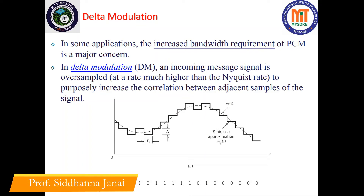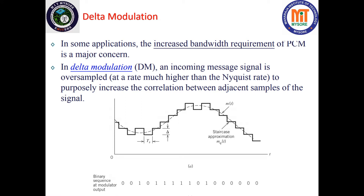Hello everyone. In the previous session we understood about companding. In today's session we will discuss about delta modulation. Delta modulation is a modulation technique which is an improved version of pulse code modulation, because in pulse code modulation we have multiple voltage levels, and since we have multiple voltage levels the bandwidth requirement of pulse code modulation will be very high.